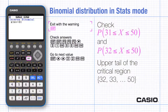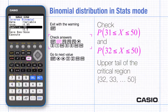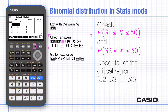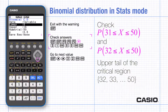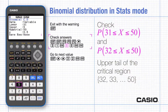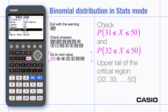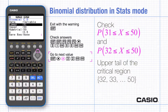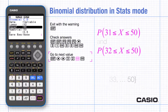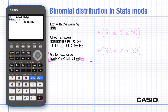Exit to remove the warning and then go back through the menus to check the cumulative probabilities of at least 31. There's no need to change N and P. Notice this is more than 5%, so go back and check the critical region starting with 32. This is less than 5%, so these two answers together are evidence that the critical region starts at 32. Remember to give both tails and all the supporting evidence in your written answer.